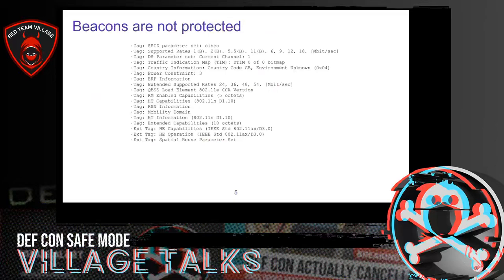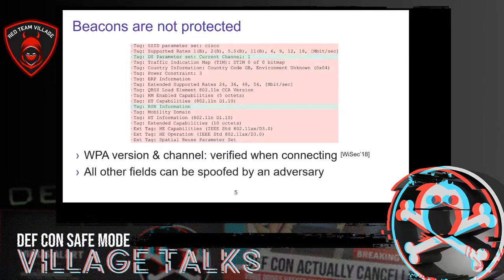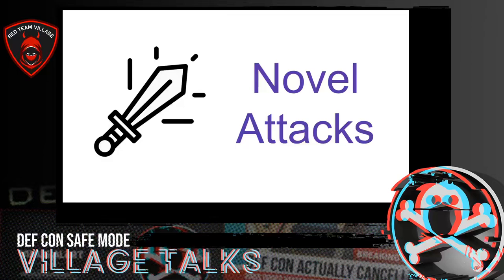If we look at the contents inside the beacon, we see that there's a lot of information that a beacon contains. A small amount of information is indirectly verified when you connect to the network — for example, the WPA version supported by the network on the current operating channel is securely verified when connecting. But all the other information contained in a beacon can be spoofed by an adversary and possibly abused. So the first thing we did in our research is search for novel attacks that an adversary can carry out by spoofing these beacon frames.